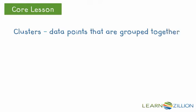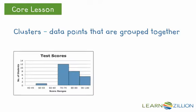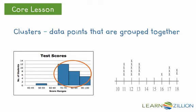If you have a cluster, that is data points that are grouped together. So you can see in the histogram, between 70 to 100, there is a cluster. On the dot plot, there are two clusters, between 11 and 13, and 16 and 18.